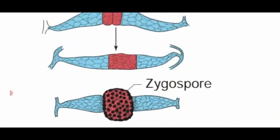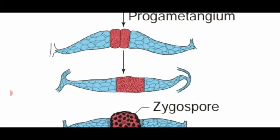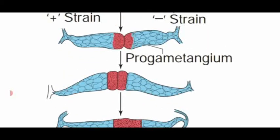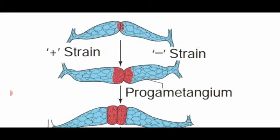Dear students, I hope you have all understood Rhizopus vegetative structure, asexual reproduction, and sexual reproduction by gametangial copulation. Now we are entering into the new topic, that is the life cycle of Agaricus.